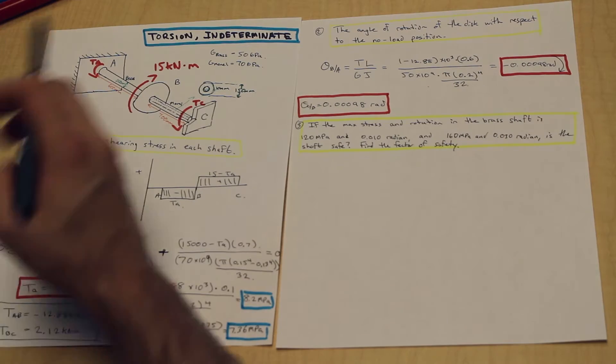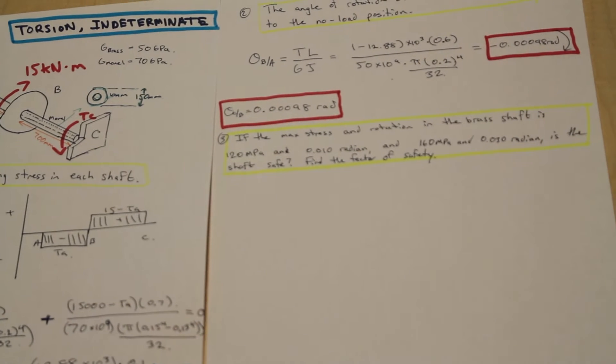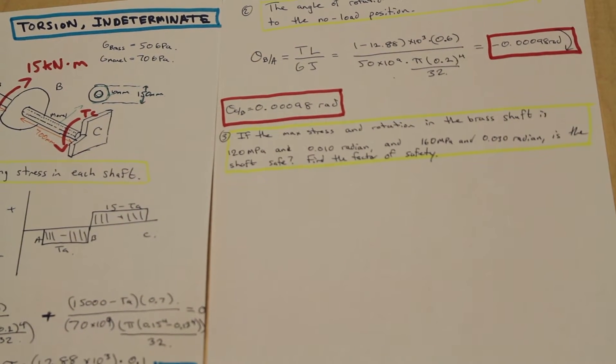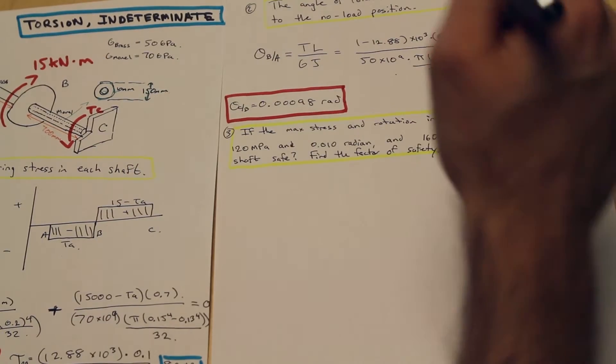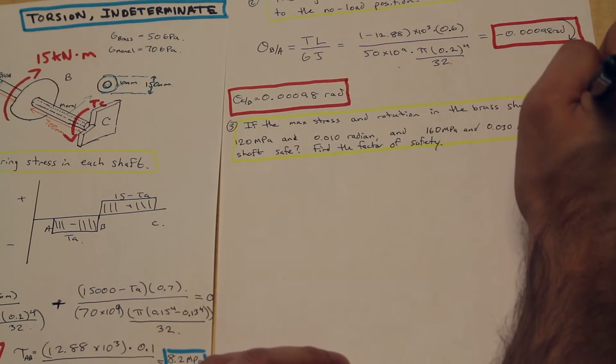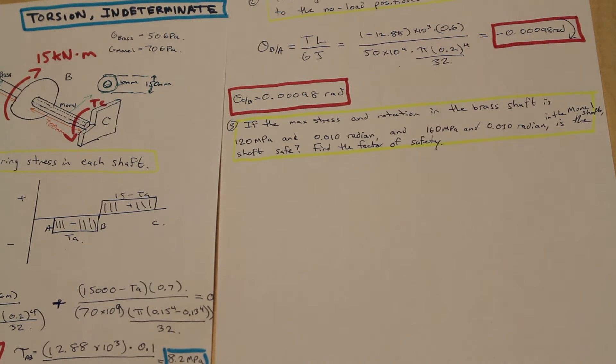The question is asking us if the max stress and rotation in the brass shaft is 120 megapascals and 0.01 radian, and 160 MPa and 0.03 radian in the Monel shaft. Is the shaft safe? And we are asked also to find the factor of safety. It's pretty simple.